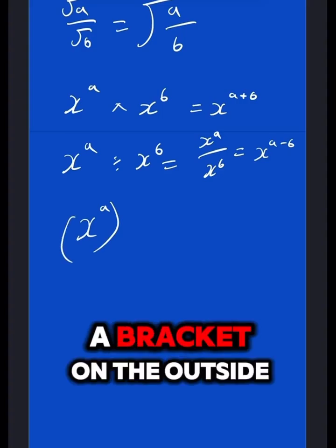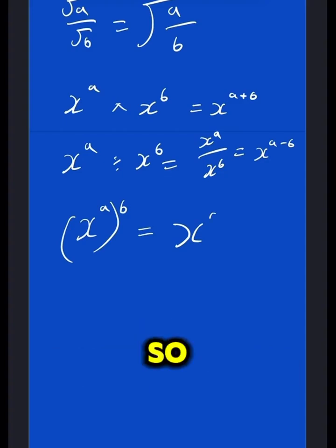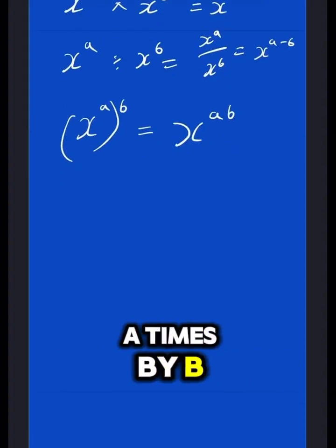Good. Now, if you have x to the power of a in brackets on the outside, like this, they're close enough, so you might as well put them together. So, it would be x to the power of a times by b.